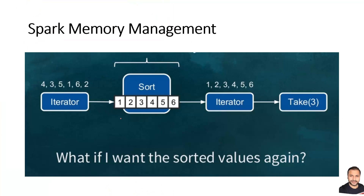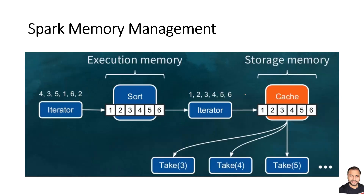For example, suppose I'm doing a sort on a DataFrame or RDD, then calling an iterator and taking some top three values. If I want a second time to take top N values, I'd have to run the entire computation again. So I'd prefer to cache the intermediate output — this storage used for the execution of the sorting is called execution memory, and the cache storing the outcome is categorized as storage memory. There's always a contention between these two memory zones that you need to optimize.